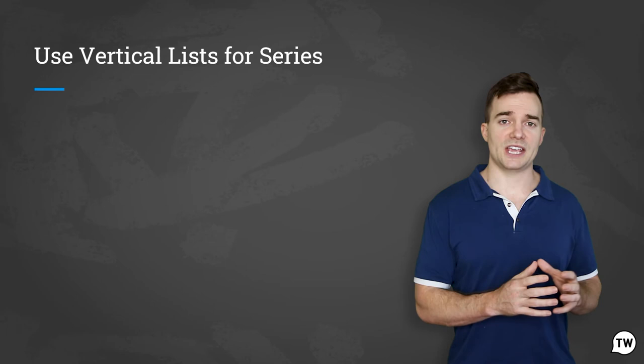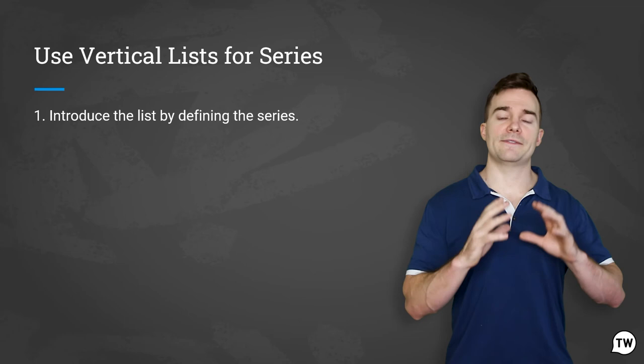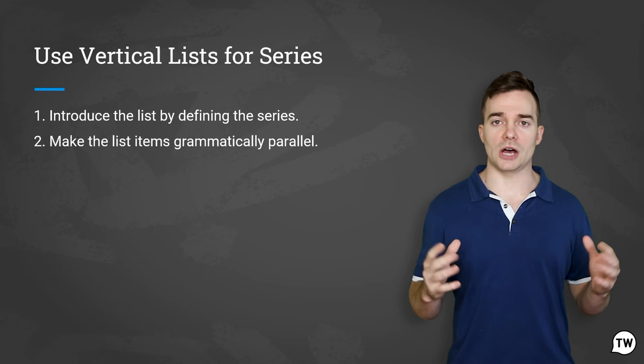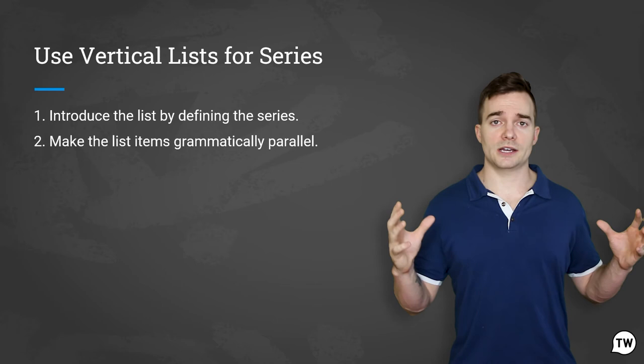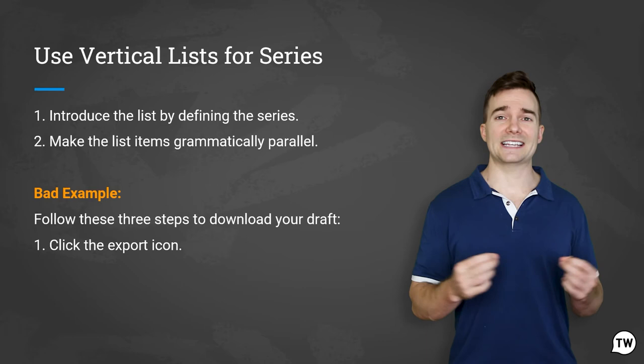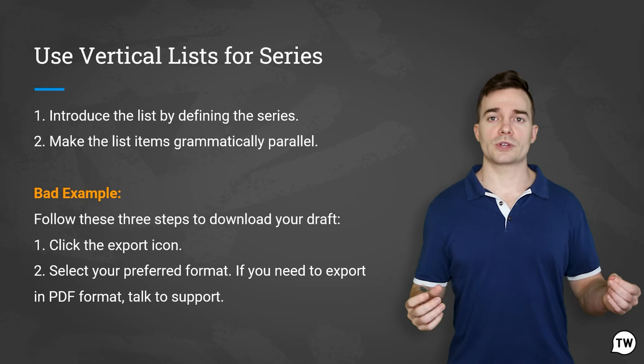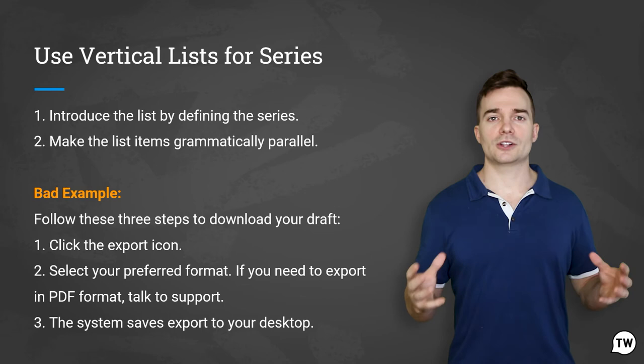It's important to keep using vertical lists across your documentation — this is how you make solutions readable. First, introduce the list by defining the series. Second, make the list items grammatically parallel, often starting with a verb in each item. Here's a bad example: 'Follow these three steps to download your email: 1) Click the mailbox icon. 2) Input your ID — if you need an ID, call security. 3) The system saves the email to disk.' As you can see, it's missing parallel verbs and includes extra information that should be put elsewhere — simply a no-go.